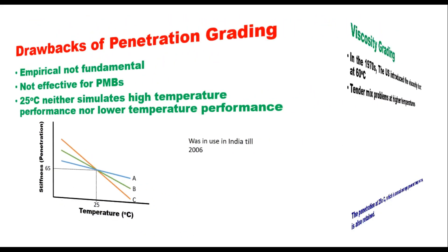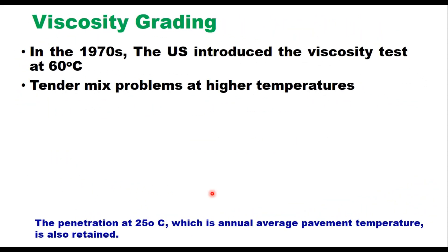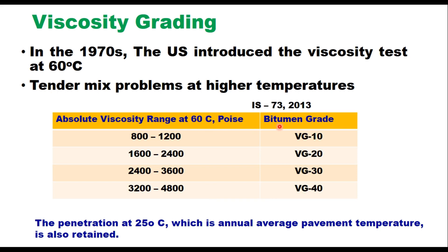Therefore, in the late 1970s, the US introduced the viscosity test at 60°C to address the issue of tender mix at higher temperatures. Based on viscosity at 60°C, bitumen were graded as VG 10, VG 20, VG 30, or VG 40. VG stands for viscosity grade. The absolute viscosity at 60°C ranges from 800 to 1200 Poise for VG 10, and 3200 to 4800 Poise for VG 40 — that is, 80 to 120 times the grade number.